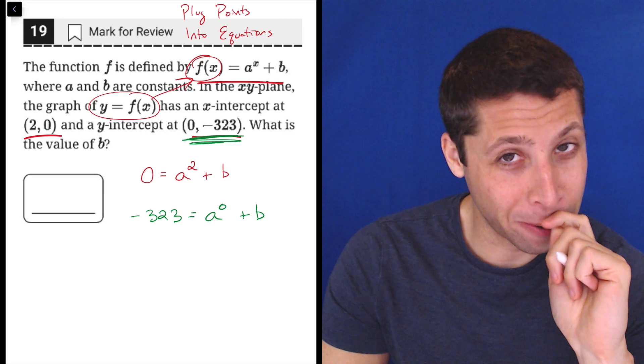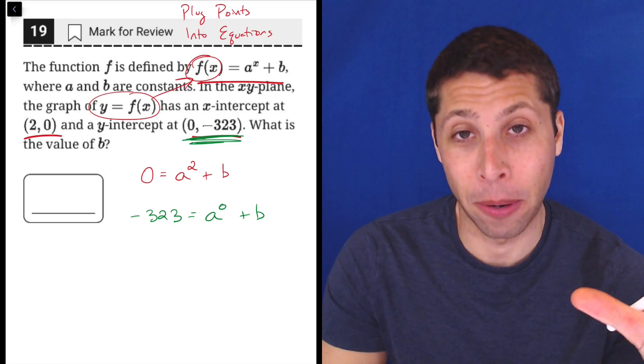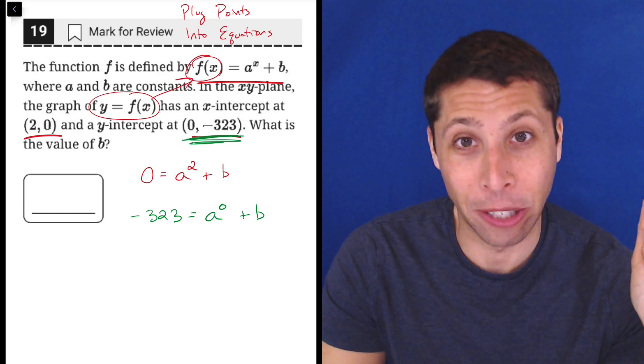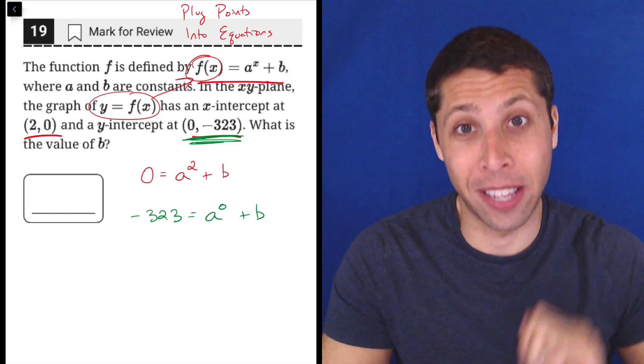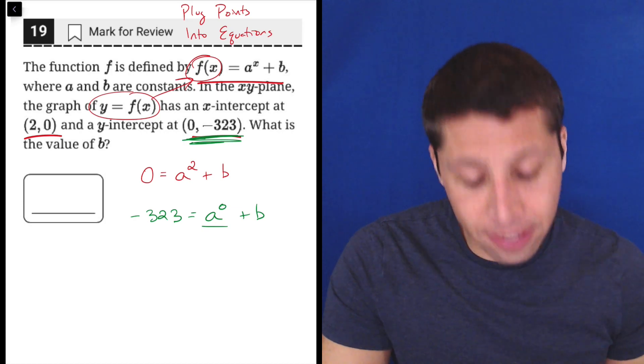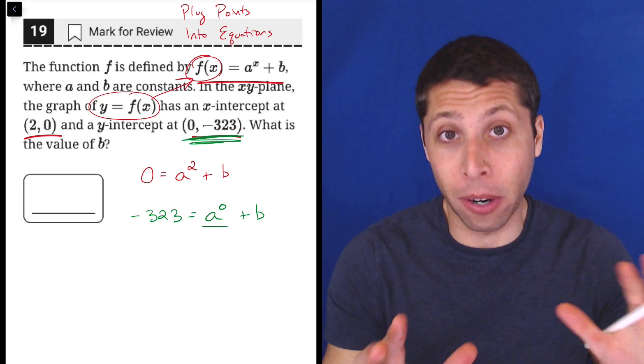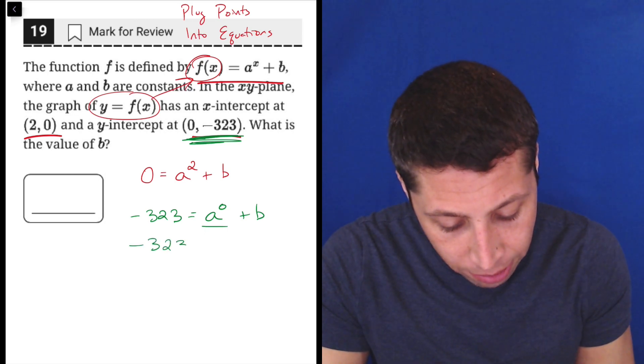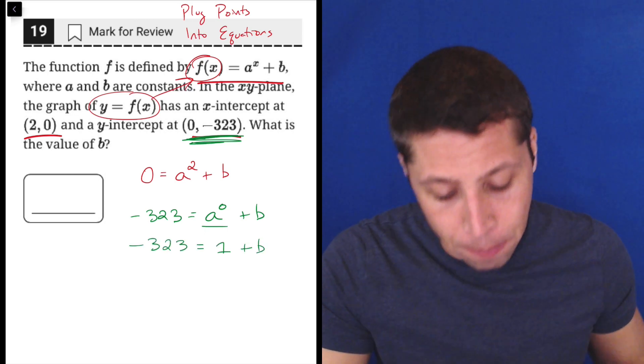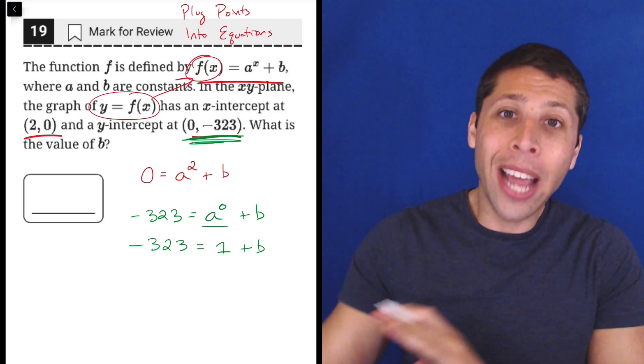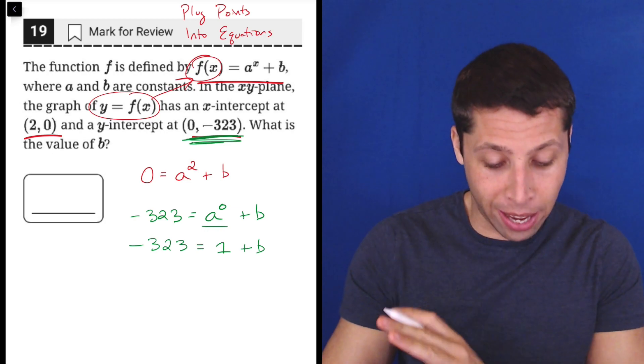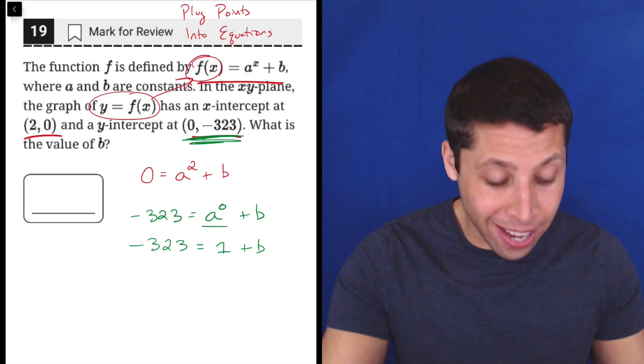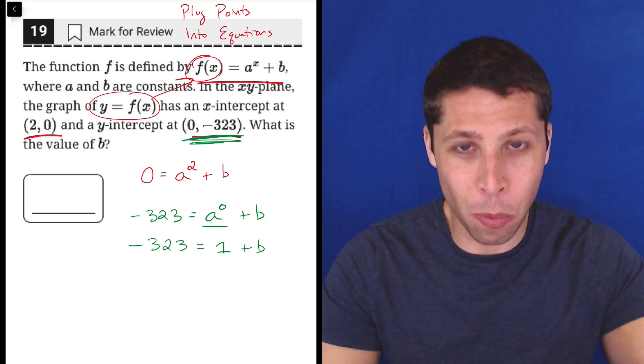Well, now that one we've got some power with here. 0 is a great number. But it's much better when it's on the complicated side of an equation because 0 uncomplicates things very quickly. a to the 0, we just need to know any number to the 0 power is 1. So this is really negative 323 is equal to 1 plus b. Now, I know we don't know what a is, but I don't care. Okay? That's it. This is just a rule of math that a or anything to the 0 is going to be 1.